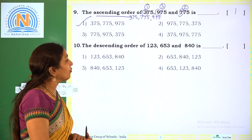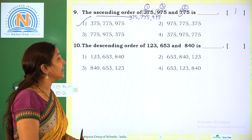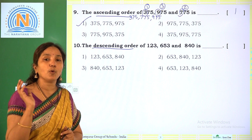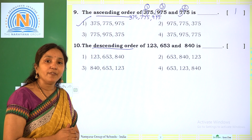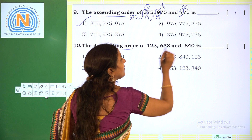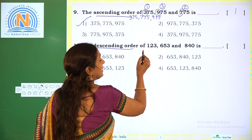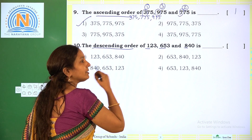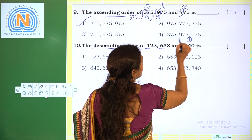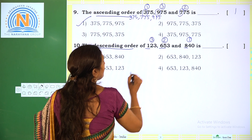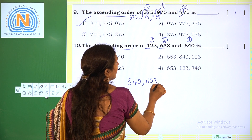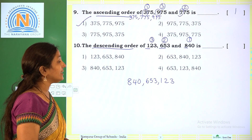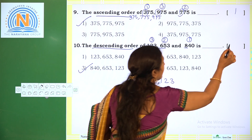Next: the descending order of 123, 653, and 840. Descending order means numbers arranged from greatest to smallest. All are 3-digit numbers. Checking the hundreds place: 1, 6, and 8. The greatest is 8, so 840 comes first. Then 6, so 653 comes second. Then 1, so 123 comes third. The descending order is 840, 653, 123. The correct option is 3.